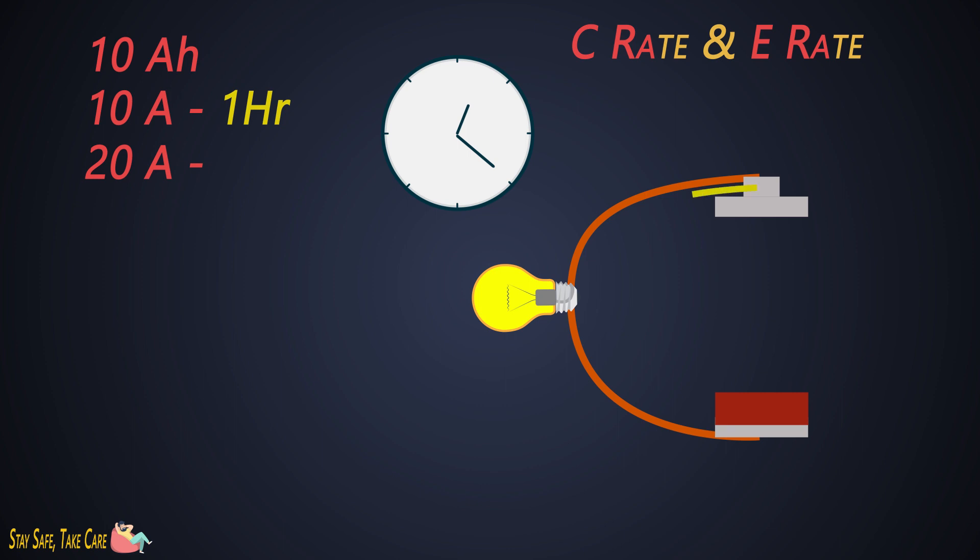If we take the 2C rate of this battery, then it would be 20 amperes. If we draw 20 amperes continuously from this battery, then it will discharge within 30 minutes. And a C by 2 capacity would be 5 amperes. It will take 2 hours to discharge that battery fully.